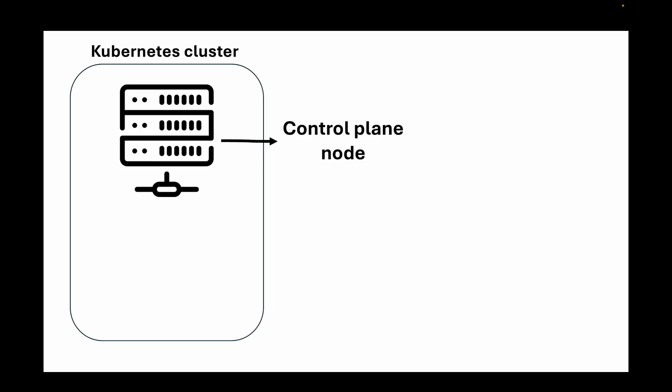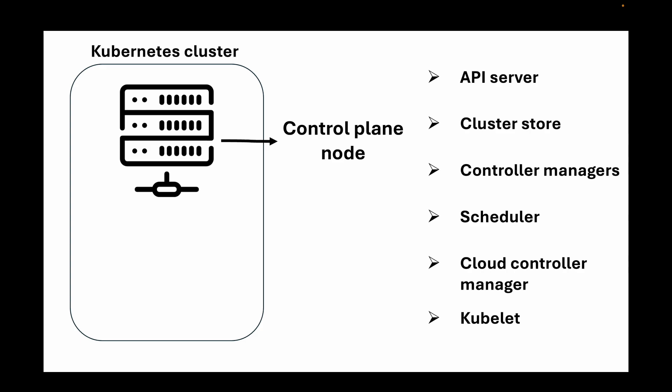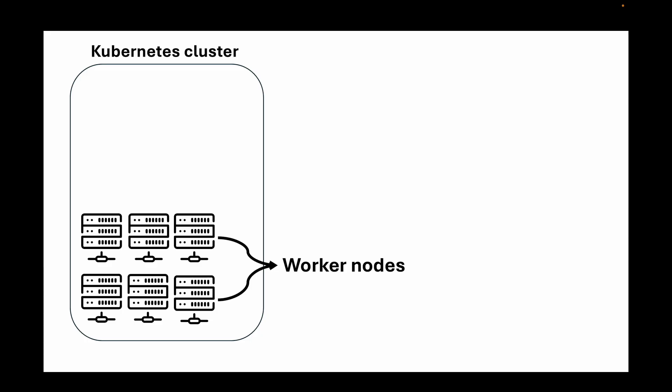When talking about the control plane node, you'll hear about the API server, the cluster store, the controller manager, the scheduler, the cloud controller manager, and the kubelet. Anything to do with your cluster — deploying pods onto nodes, managing the number of nodes, where resources live — everything runs on your control plane node.